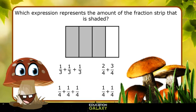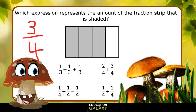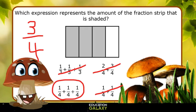This problem says, which expression represents the amount of fraction strip that is shaded? Well, 3 out of the 4 sections are shaded, so it must be 3 fourths. Now, we need to find an answer choice that equals 3 fourths. The first answer choice is 1 third plus 1 third plus 1 third. That would be 3 thirds, or 1 whole. That can't be right. 2 fourths plus 3 fourths equals 5 fourths, so that's not right. 1 fourth plus 1 fourth equals 2 fourths, so that's wrong. Finally, we have 1 fourth plus 1 fourth plus 1 fourth, which is 3 fourths. And we have our answer.